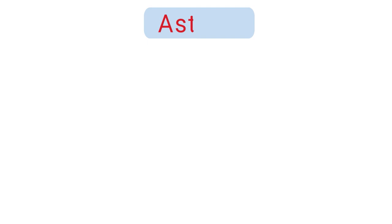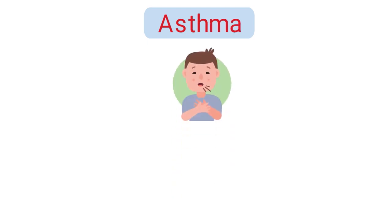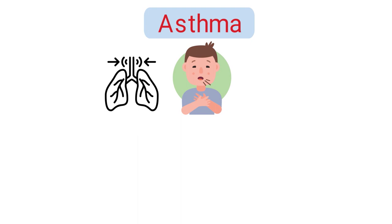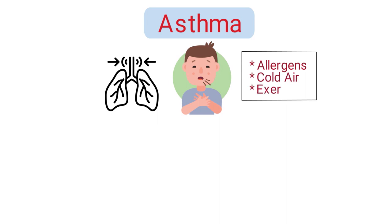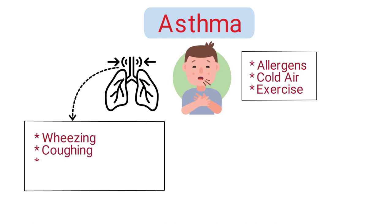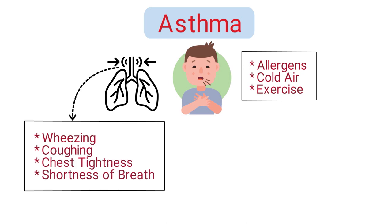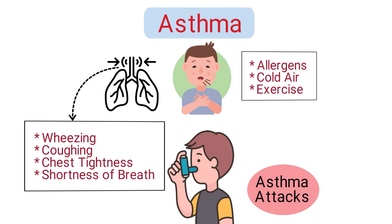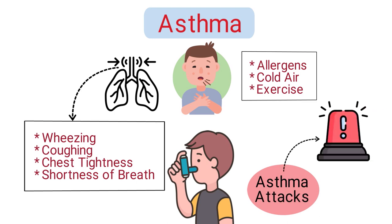Next up is asthma, which is a chronic respiratory condition where the airways become inflamed and narrowed, often in response to specific triggers like allergens, cold air, or exercise. This narrowing can cause periods of wheezing, coughing, chest tightness, and shortness of breath. While it can be managed with medications and lifestyle adjustments, severe episodes, known as asthma attacks, can be life-threatening.